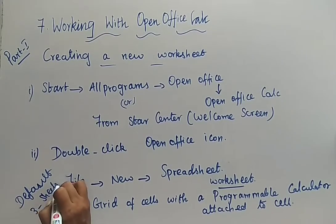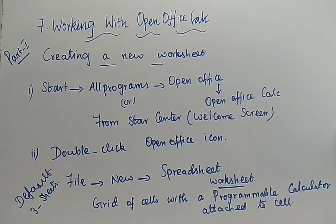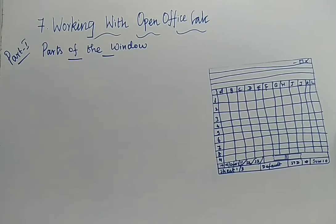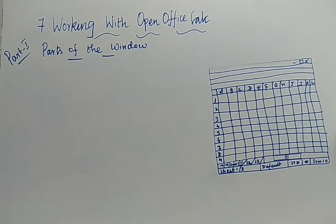Three sheets will be automatically displayed. Clear with the steps on how to create a new worksheet. Next, we are going to continue with the next topic — the parts of the OpenOffice Calc window. This window is similar to the Writer window we discussed earlier. But here the difference is that in the Writer window the center part is a workspace, but here it is a grid of cells — that is your worksheet or spreadsheet.